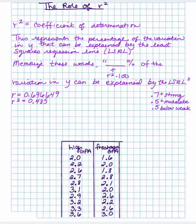So how you would be saying this on the AP exam would be 48.5% of the variation in Y can be explained by the least squares regression line.